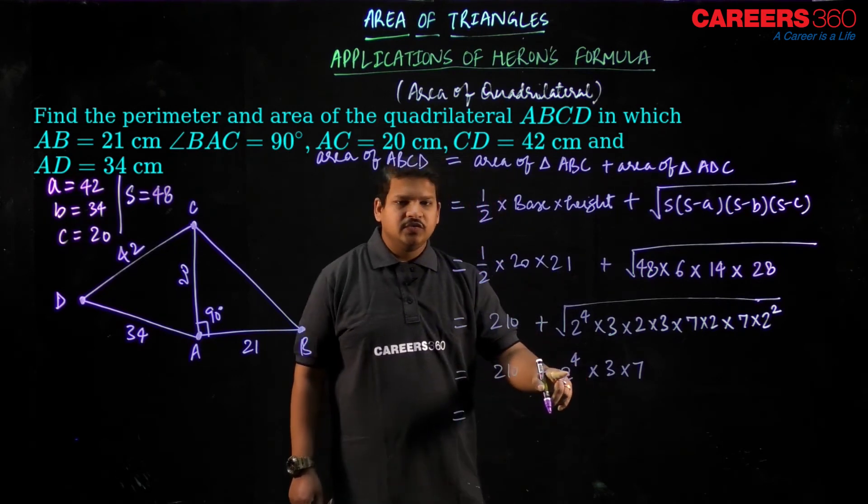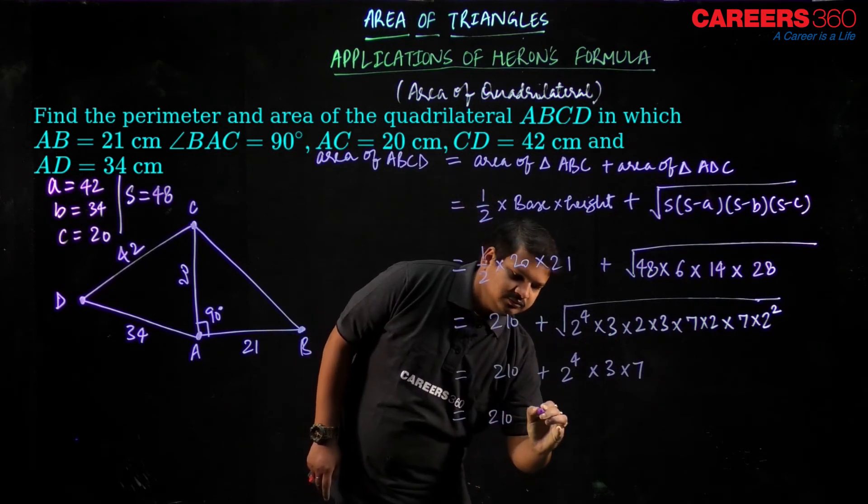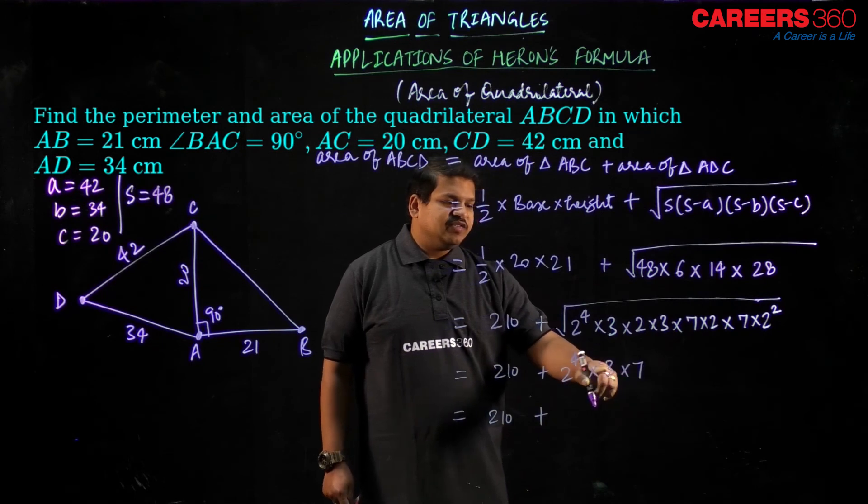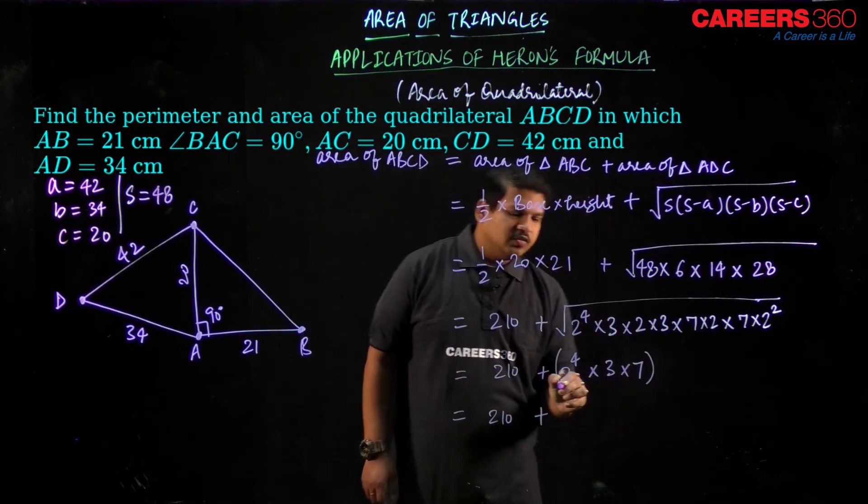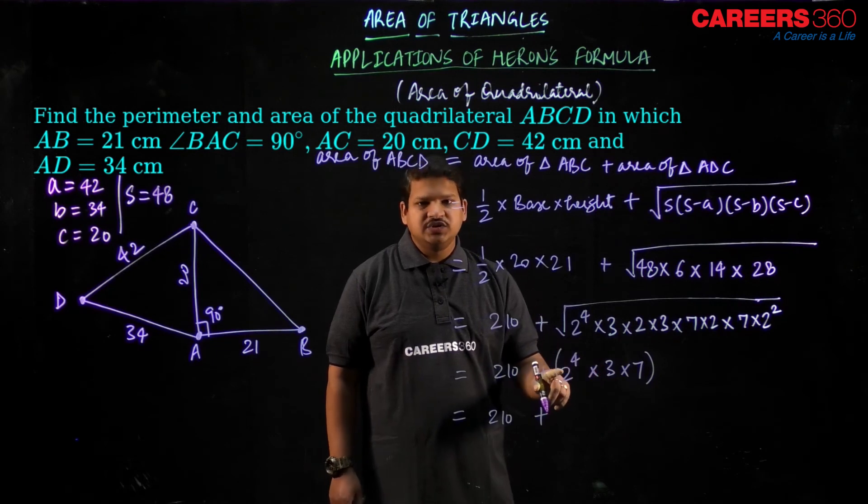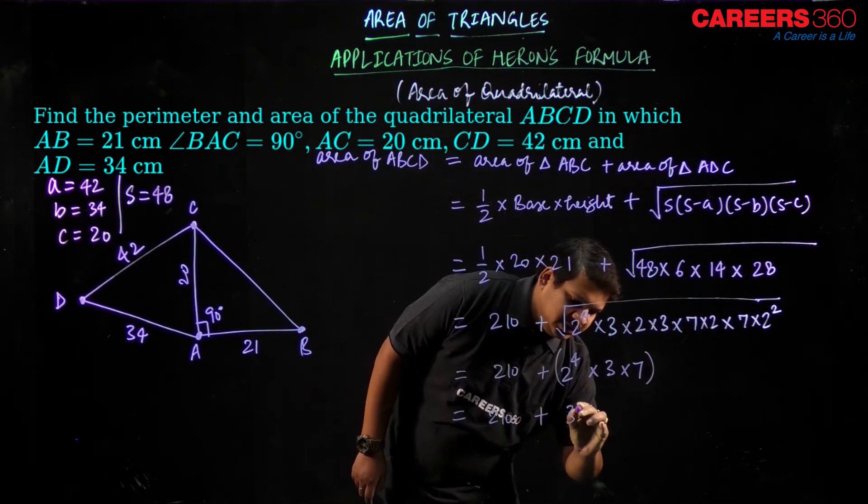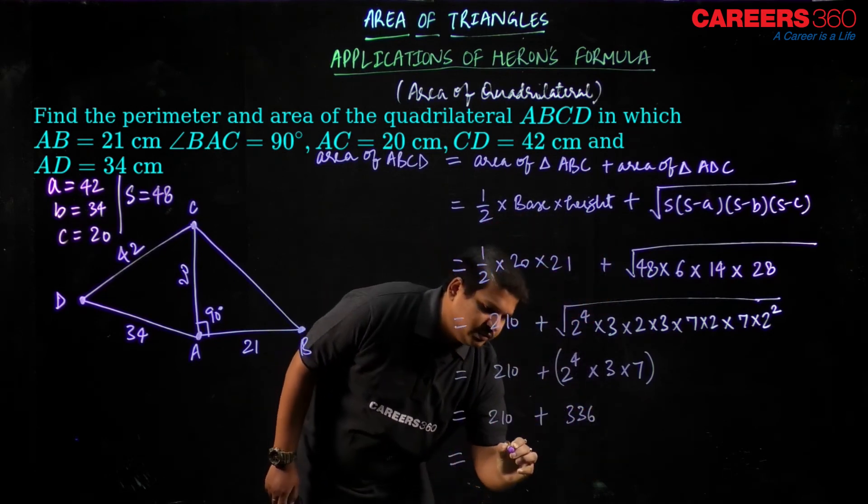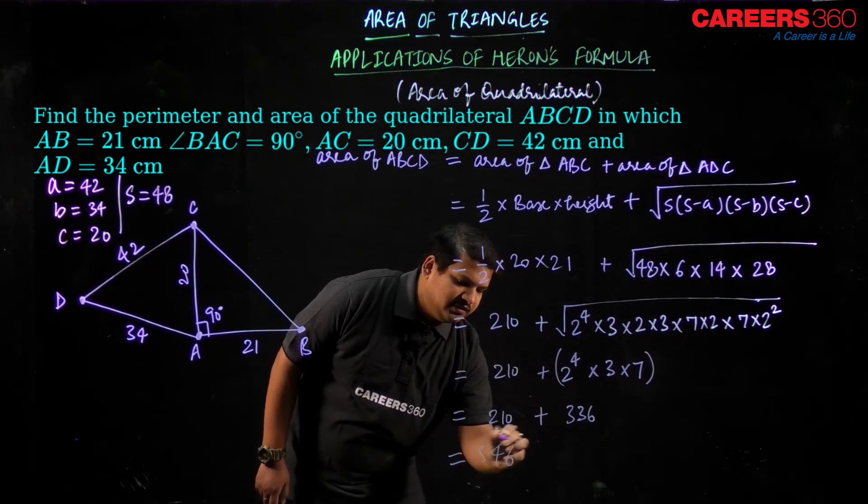This will be 2 to the power 4 will be 64 threes are 48 and into 7, or rather 7 threes are 21 into this right here would be 21 into 16 and that would be 336. So my answer would be in this case 546.